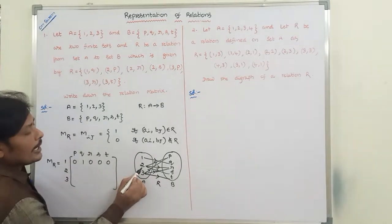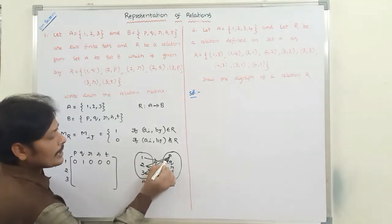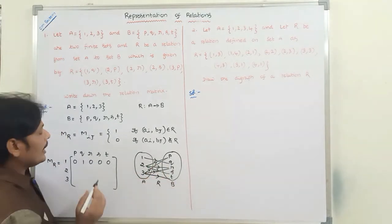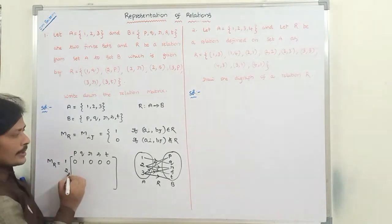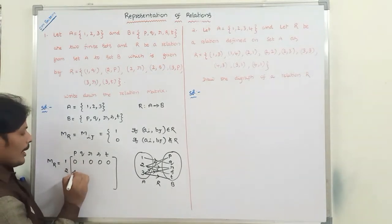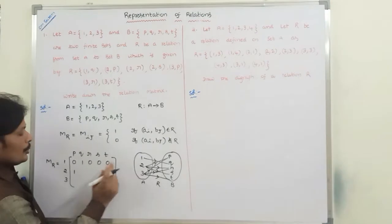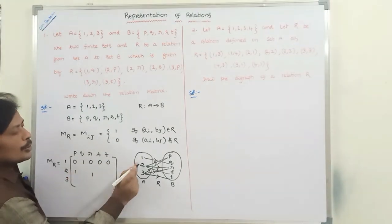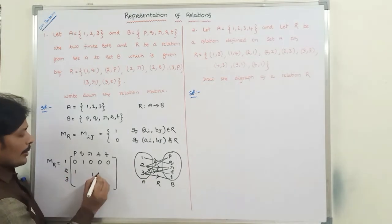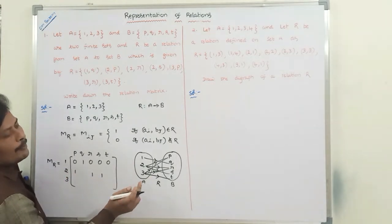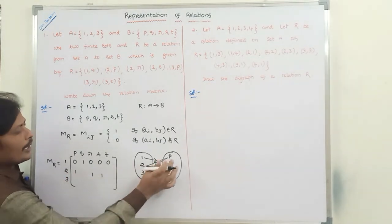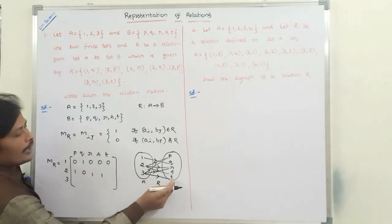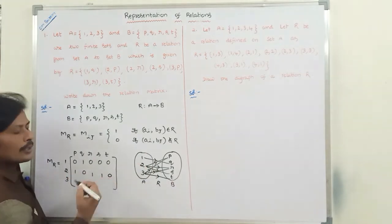For element 2: 2 is related with P, so we write 1. 2 is related with R, we write 1. 2 is related with S, we write 1. But 2 is not related with Q, so we write 0. 2 is not related with T, so we write 0.